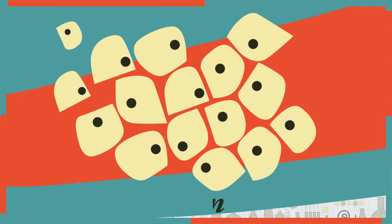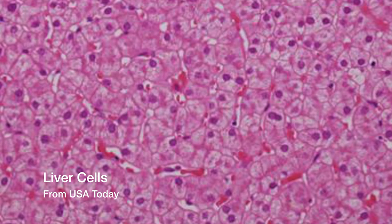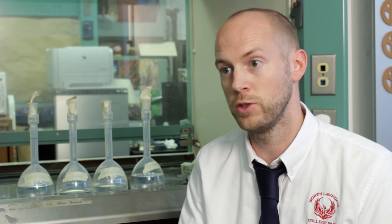Adult stem cells are there to help regenerate our tissues. For instance, our skin cells regenerate about every two weeks, and our liver cells every two hundred to five hundred days. Adult stem cells are more differentiated and can only make certain types of tissue.